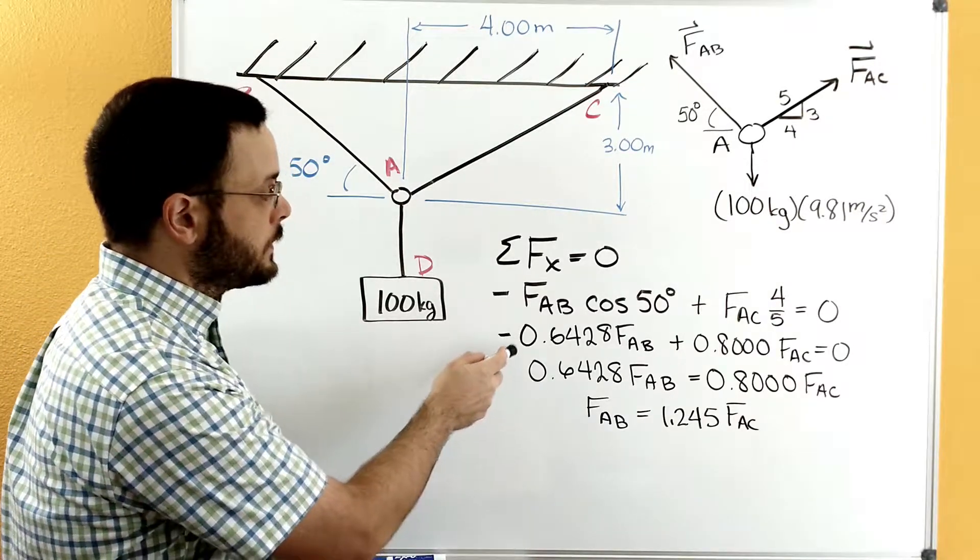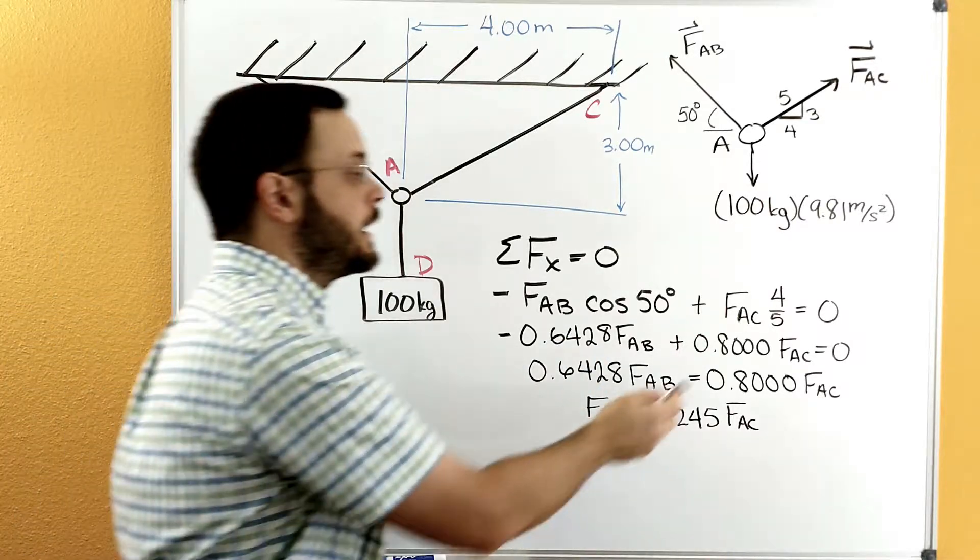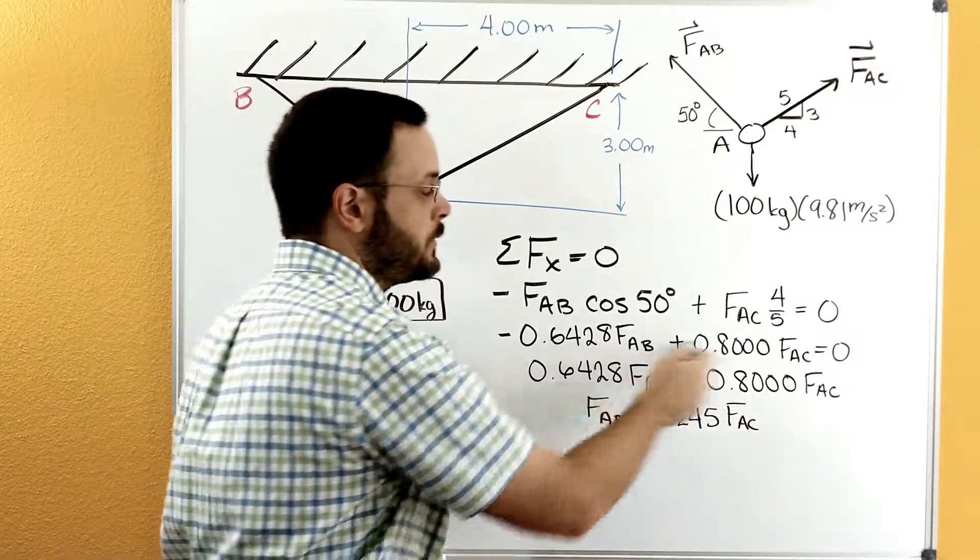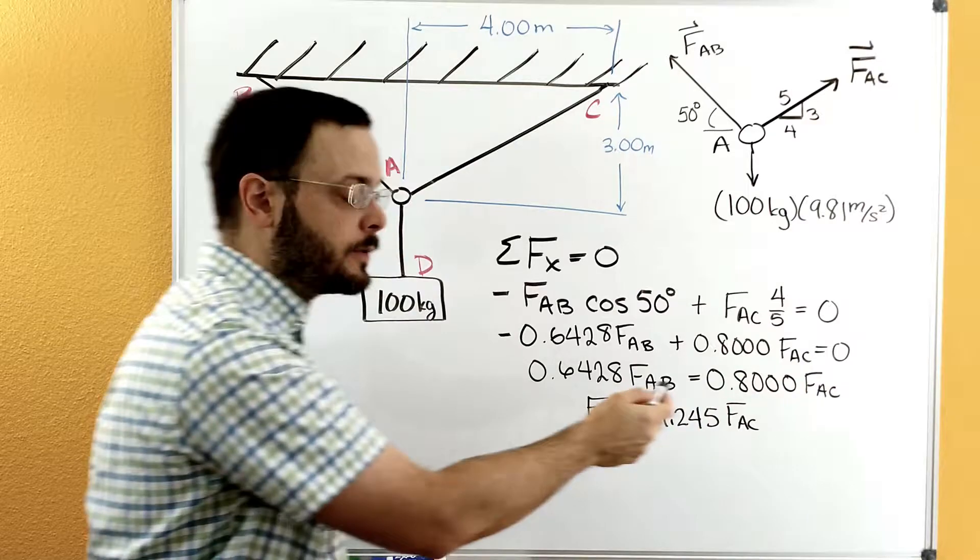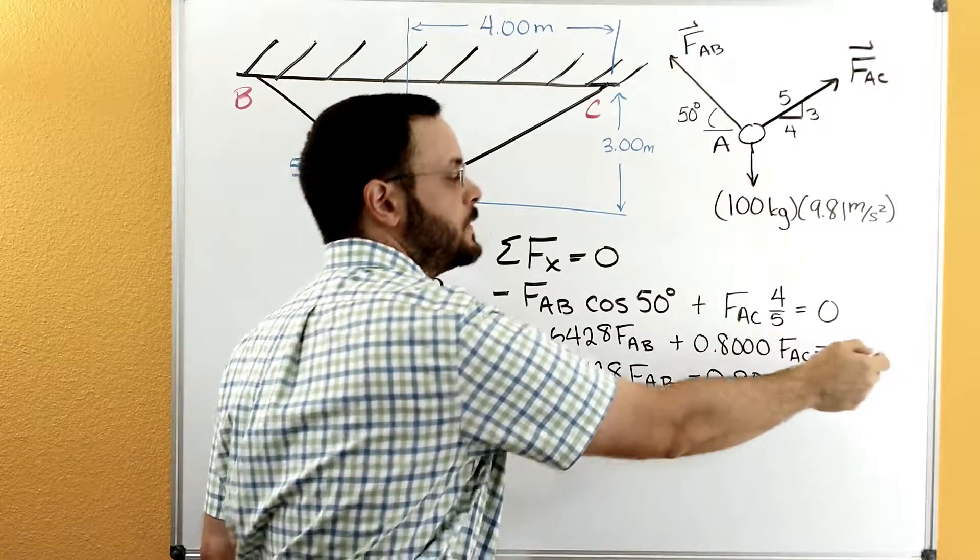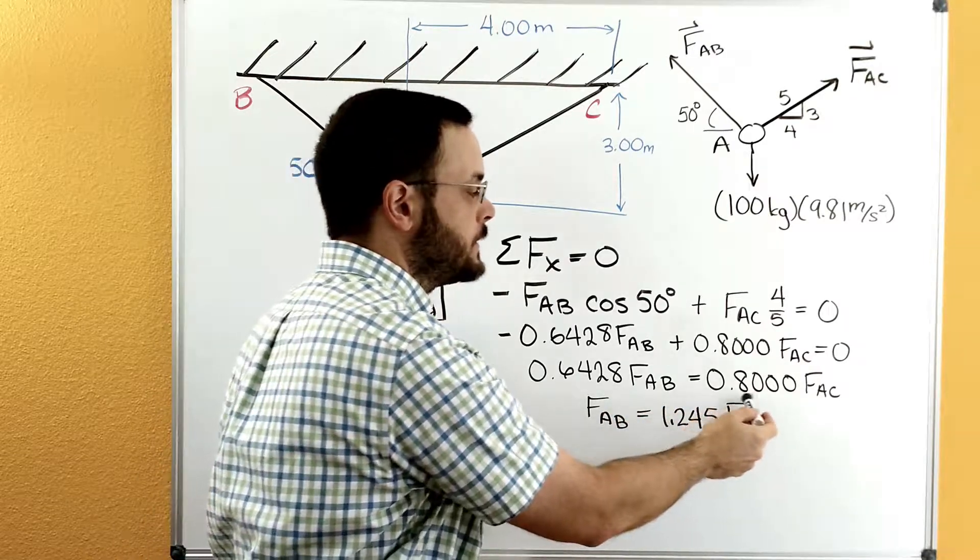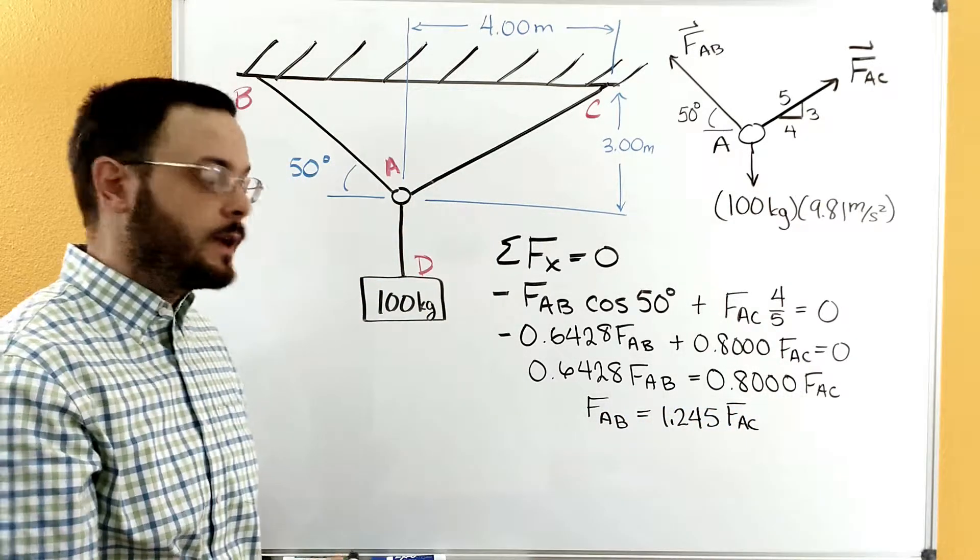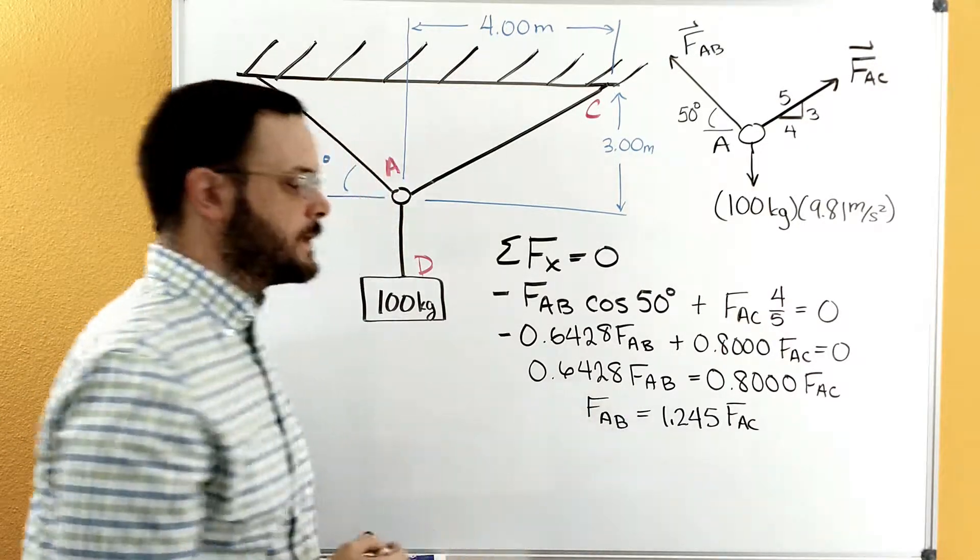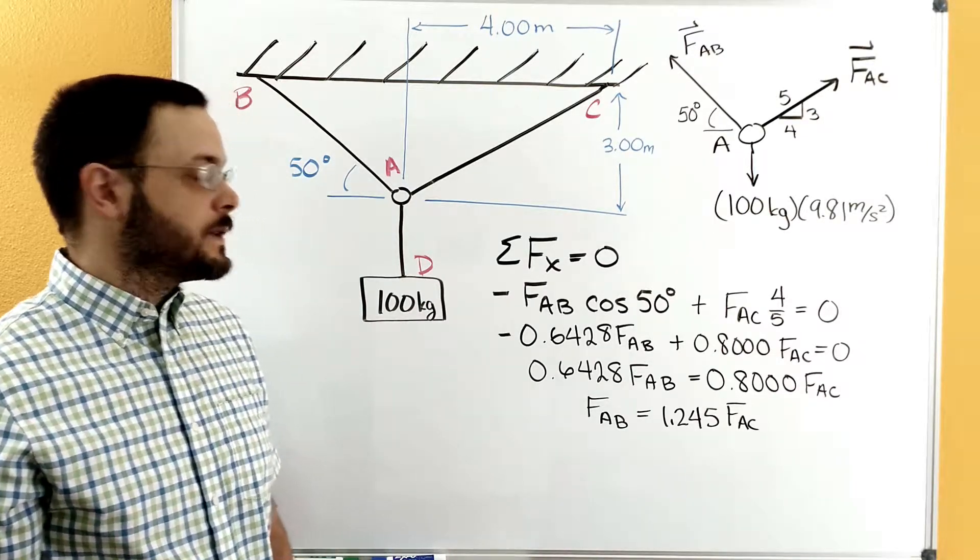And just a real quick look. We've got a cosine of 50 degrees. Go ahead and put that in your calculator, get a decimal for that. And then you have 4 fifths converted to decimals, your 0.8. Over here, both of these two terms are equal to 0. So we're going to add this negative term to both sides. It's going to move this over to the other side of the equation. So we have 0.6428 FAB is now equal to 0.8 FAC. Then we're going to divide both sides of the equation by the 0.6428. And that gives us FAB is 1.245 FAC.